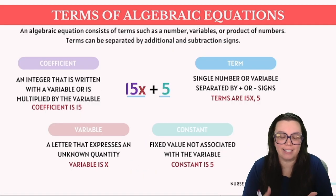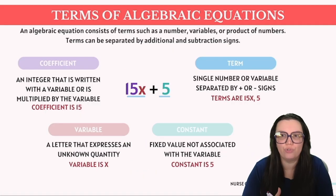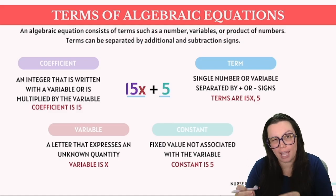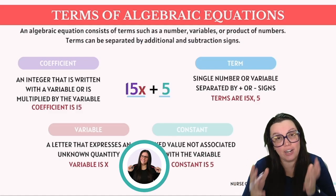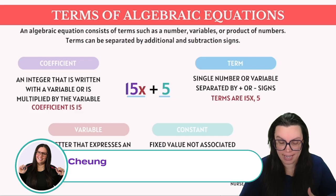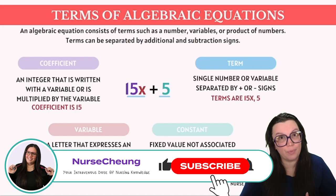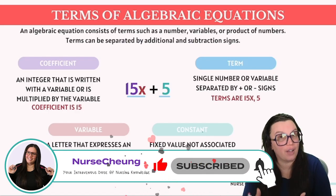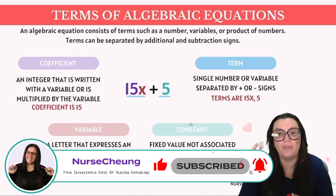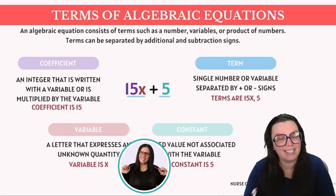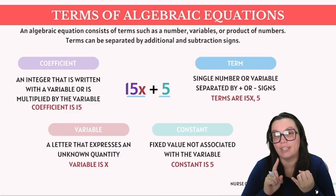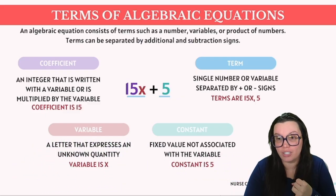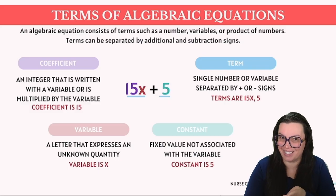On the ATI TEAS it's going to be crucial that you understand some vocabulary terms when it comes to algebra. Here you can see we have an algebraic expression 15x plus 5. There are going to be four key terms that are consistently going to be used when you're taking your test: coefficient, variable, term, and constant.